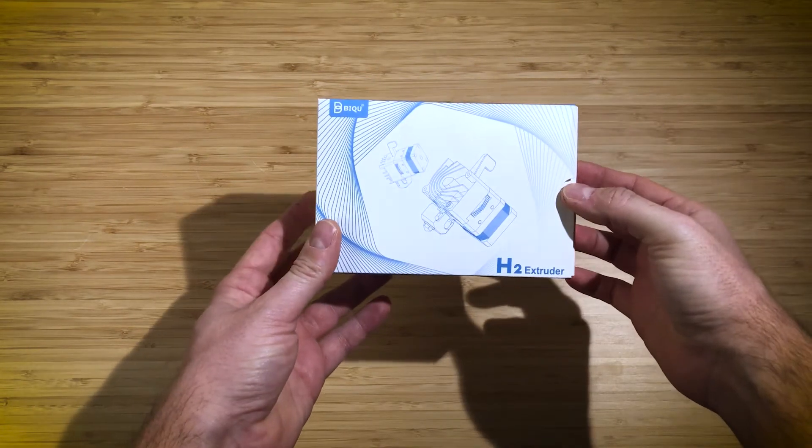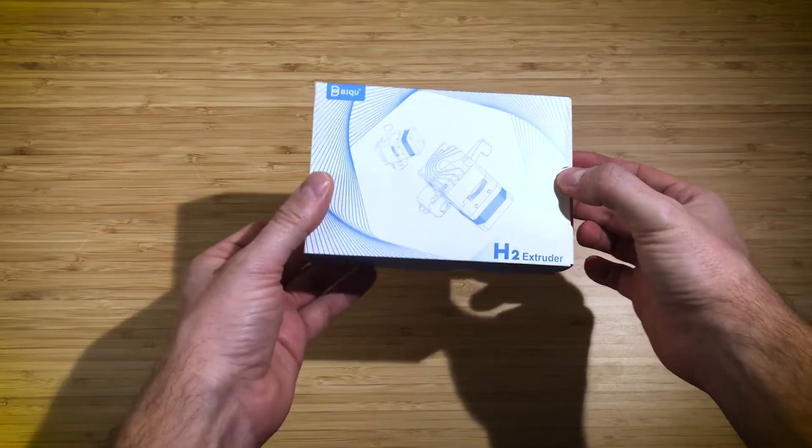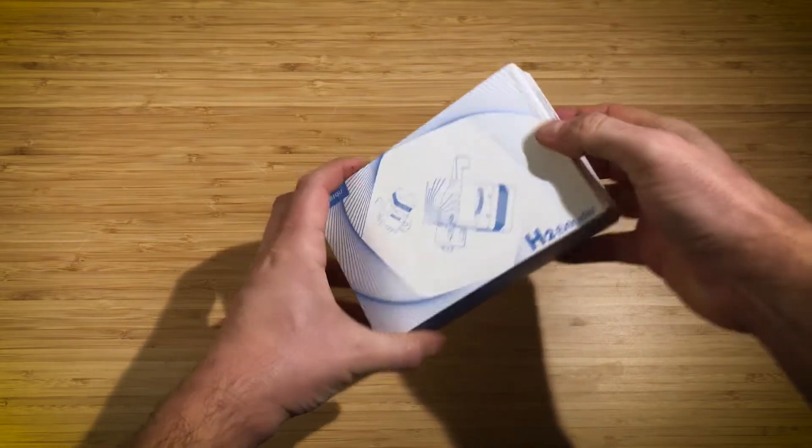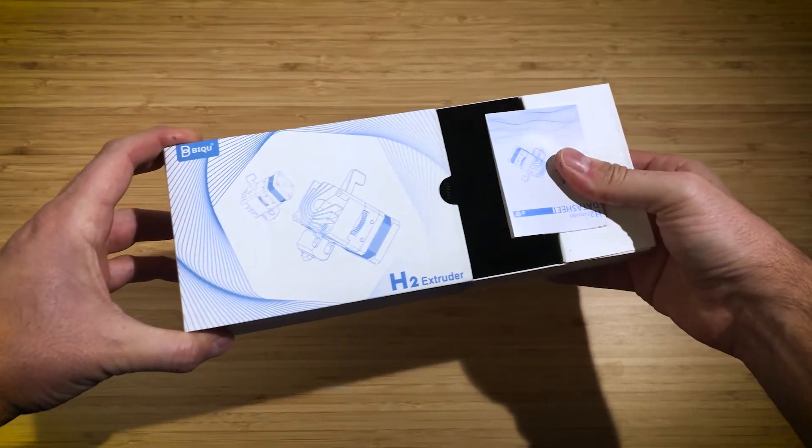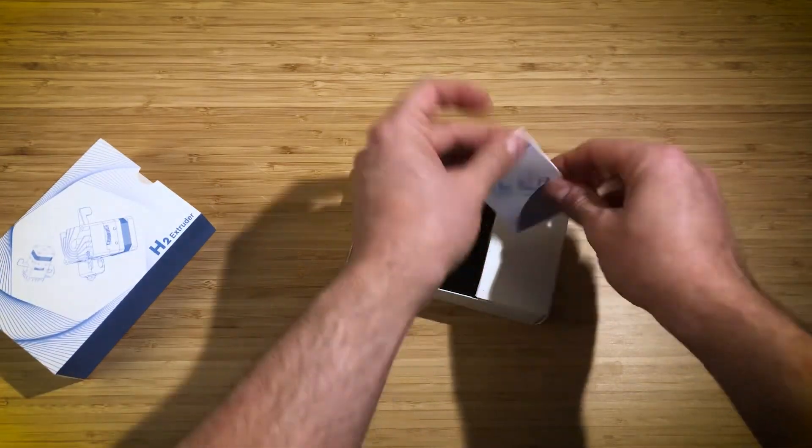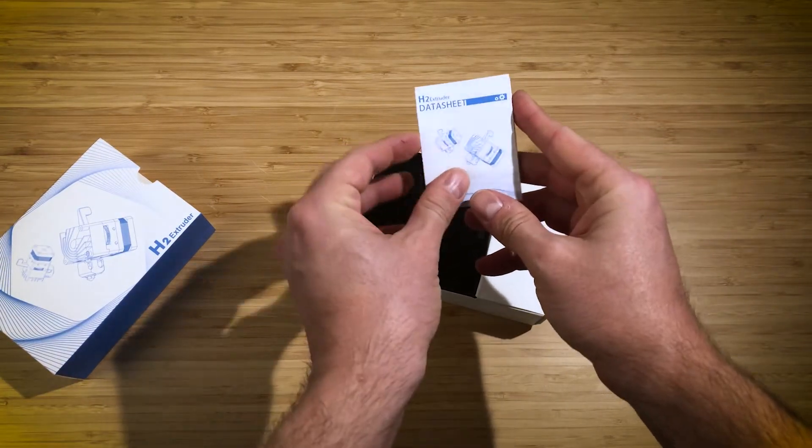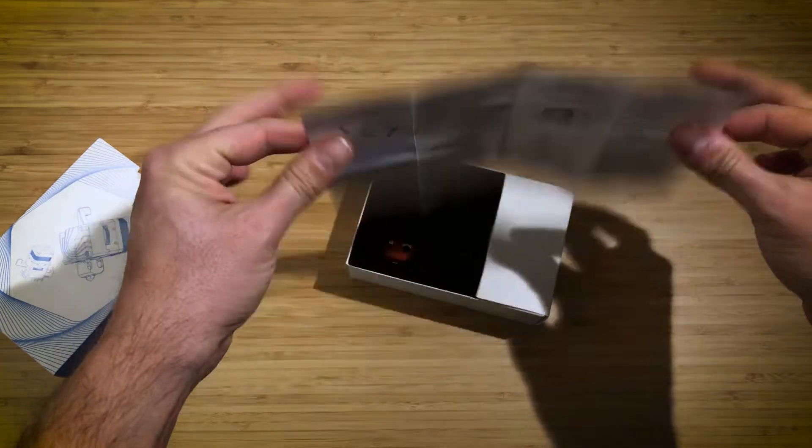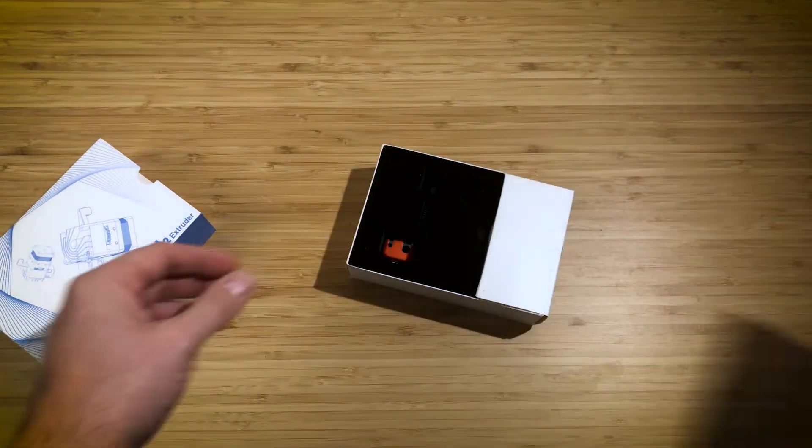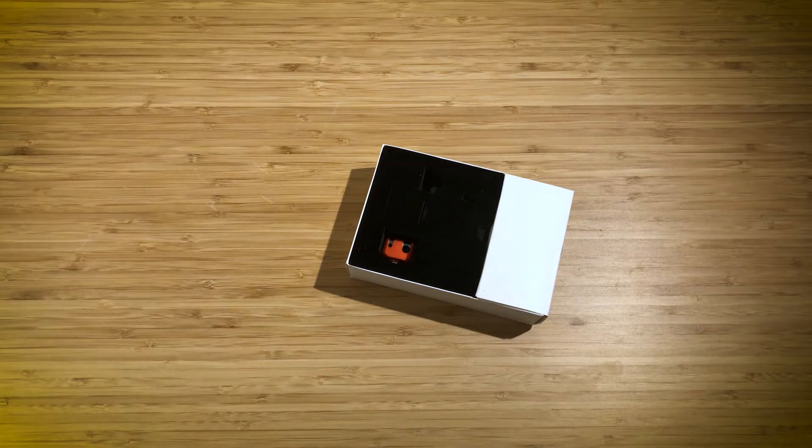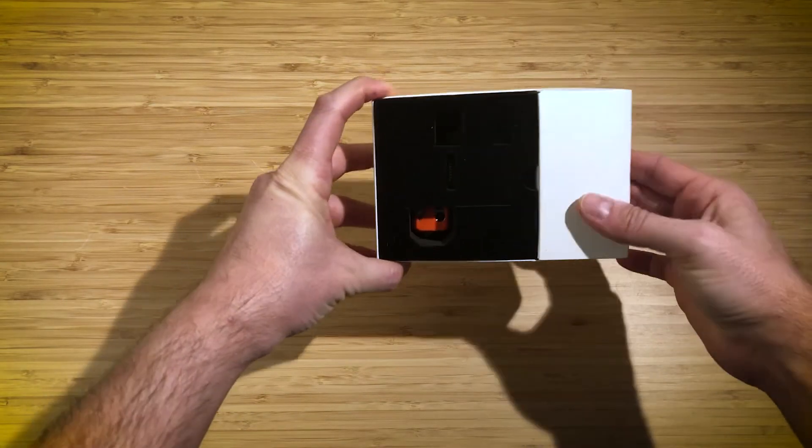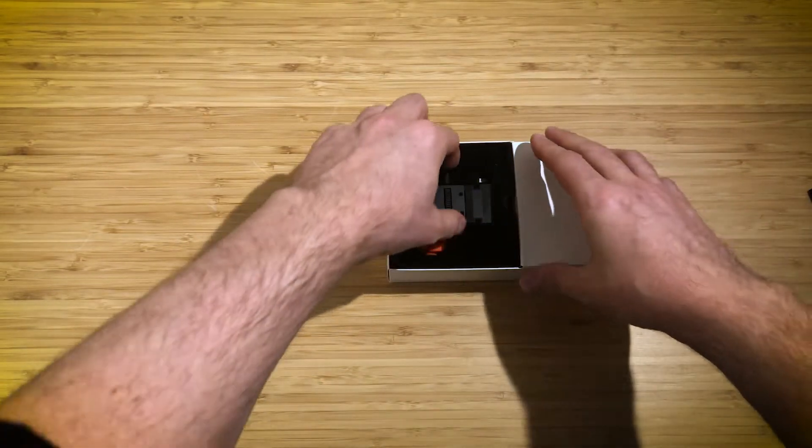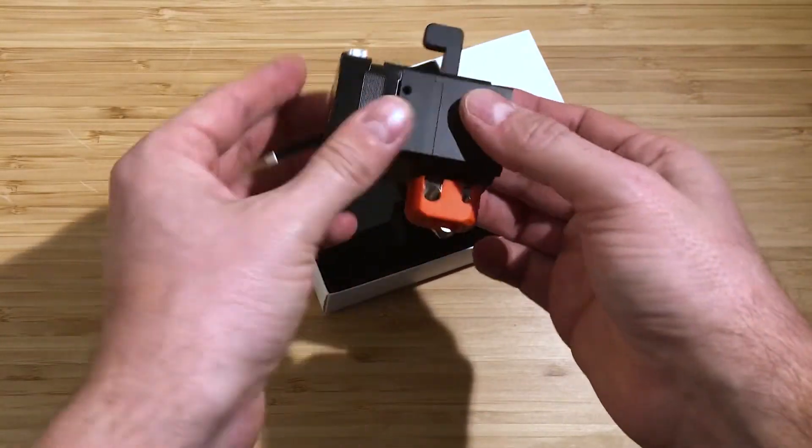So this is the box of the BQ-H2 extruder. The package is pretty neat. Just cut away the plastic on top of it. Here it is. So there is a datasheet for people with a very good eyesight. The first impression looks quite thorough. I'll give it a look later on. The package seems pretty neat. So let's take away this piece of foam. And here is the extruder.